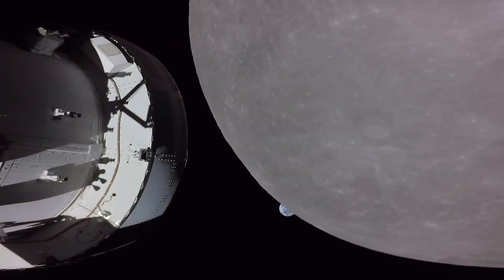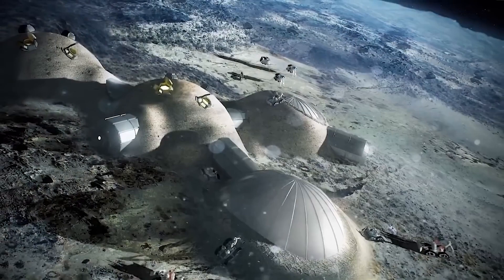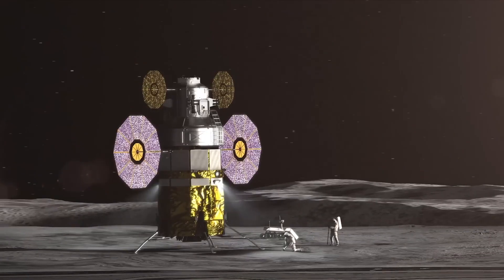NASA's Artemis missions will establish the first long-term human presence on the lunar surface. Living and working on the lunar surface will require using resources that are already present there, like water ice, which can be used for life support and fuel.